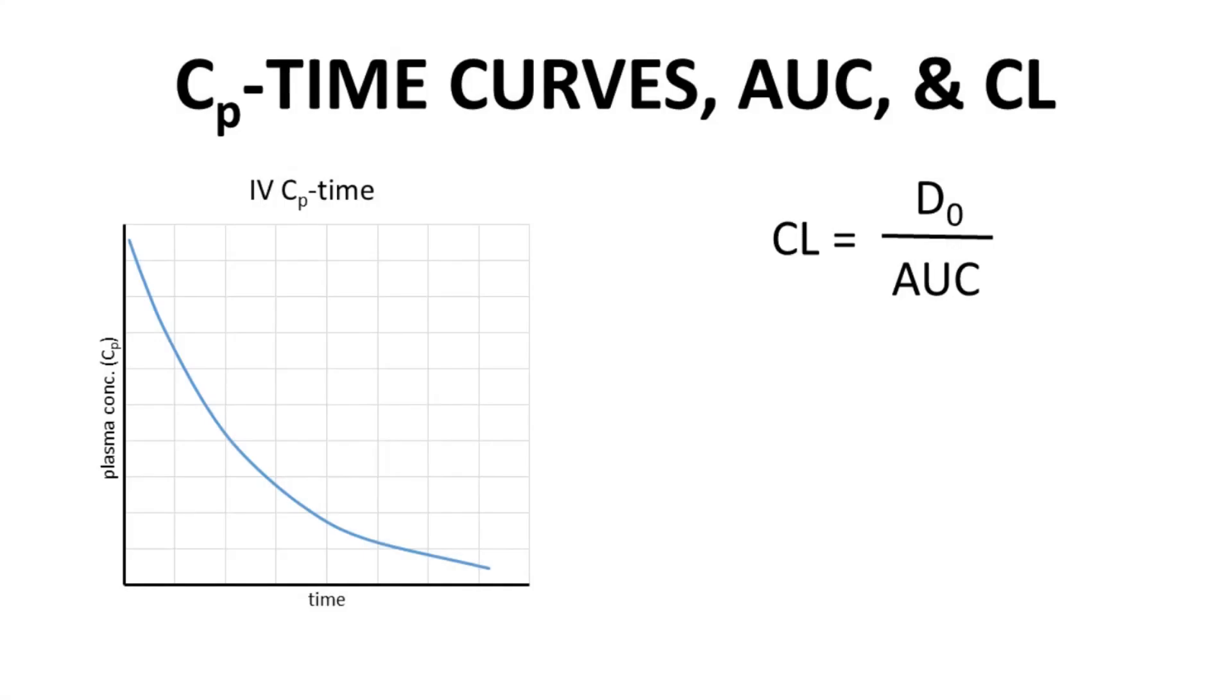We're back to our original CP time curve for an IV bolus. This curve defines an area, the area under curve or AUC. The front edge and tail end of the curve are not defined. If you know the elimination rate constant, then estimating the area under the curve including these gaps is fairly easy.